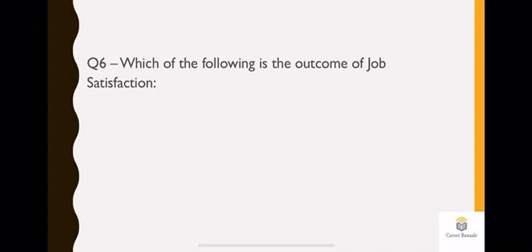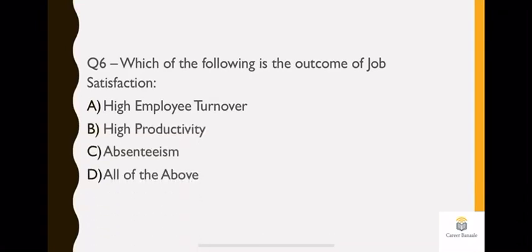Question number six: which of the following is the outcome of job satisfaction? If you are satisfied with your job, what will be the outcome? Option A: high employee turnover. Option B: high productivity. Option C: absenteeism. Option D: all of the above. Definitely absenteeism won't happen. So option C is gone and option D is gone. If you are satisfied with your job, you won't be absent. You will be very happy with your job. Here the answer will be option B. High employee turnover also won't happen because you are satisfied with your job.